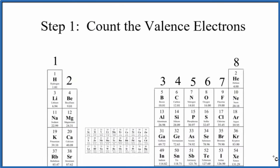Here we have the periodic table organized by number of valence electrons. Group 1 has one valence electron. Group 2 has two valence electrons. We skip the transition metals, but then group 13 through 18 has 3, 4, 5, 6, 7, and 8 valence electrons. This is something you really should commit to memory — it'll make Lewis structures a lot easier.